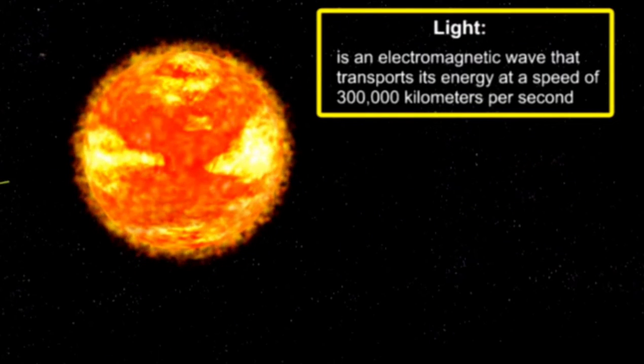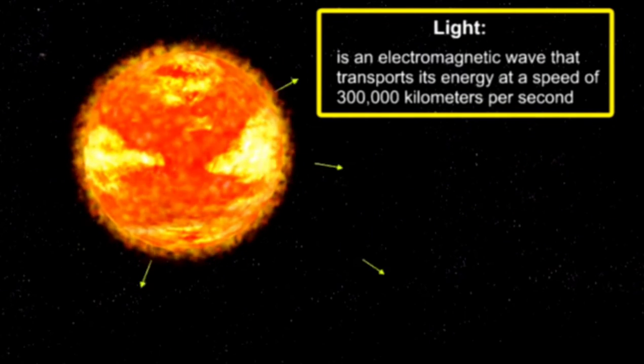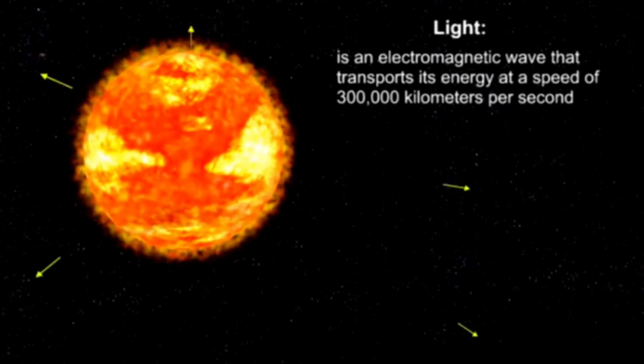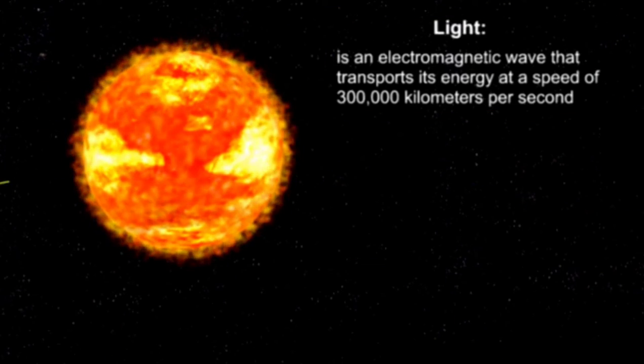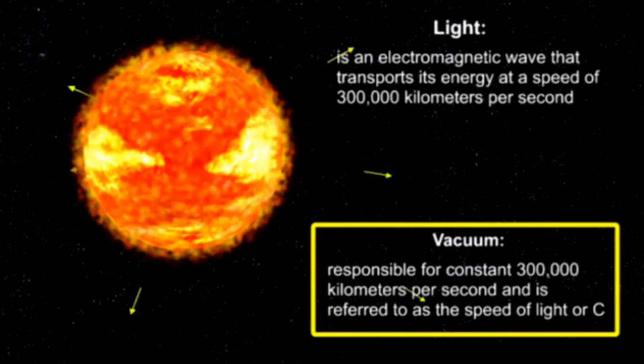Light is an electromagnetic wave that transports its energy at a speed of 300,000 kilometers per second. This constant speed is how fast light travels in a vacuum and is referred to as the speed of light, or C.